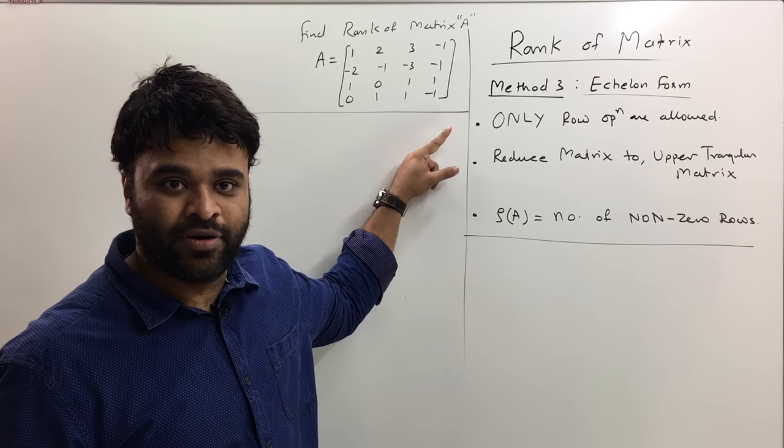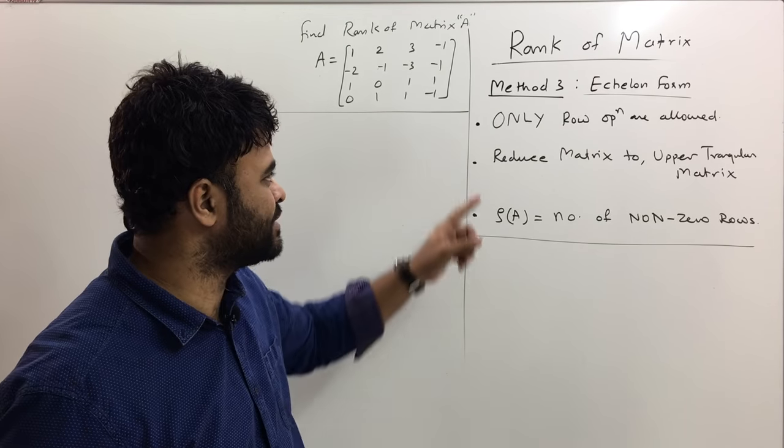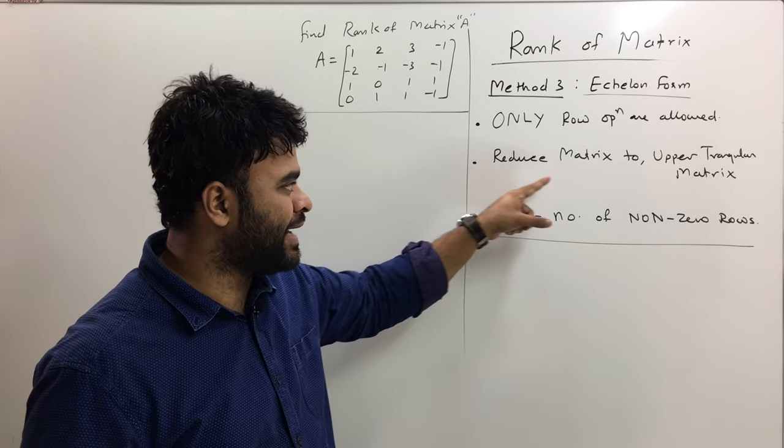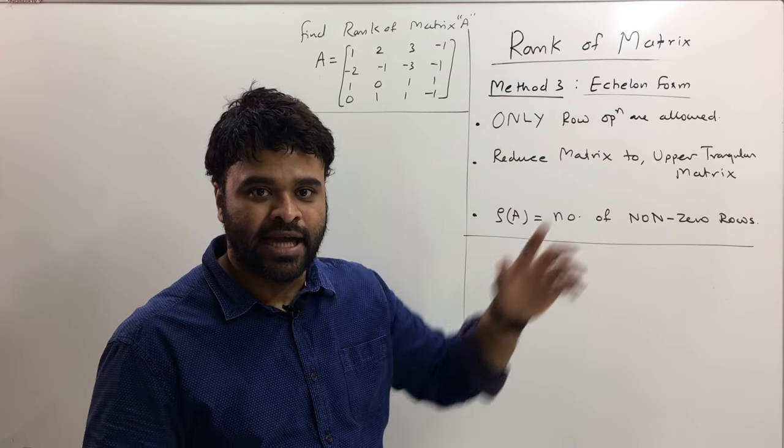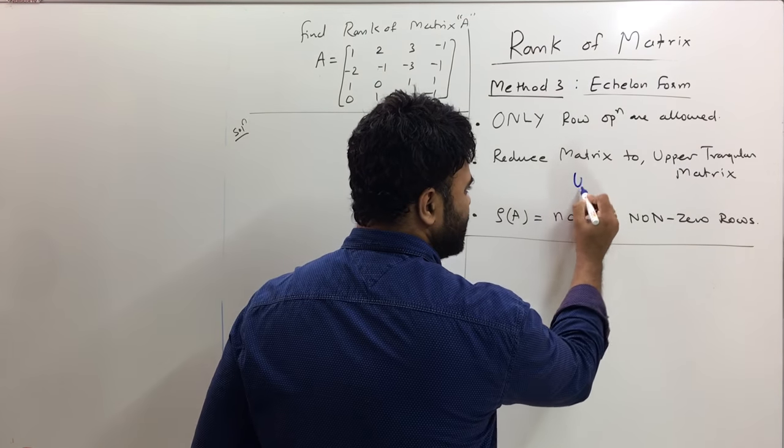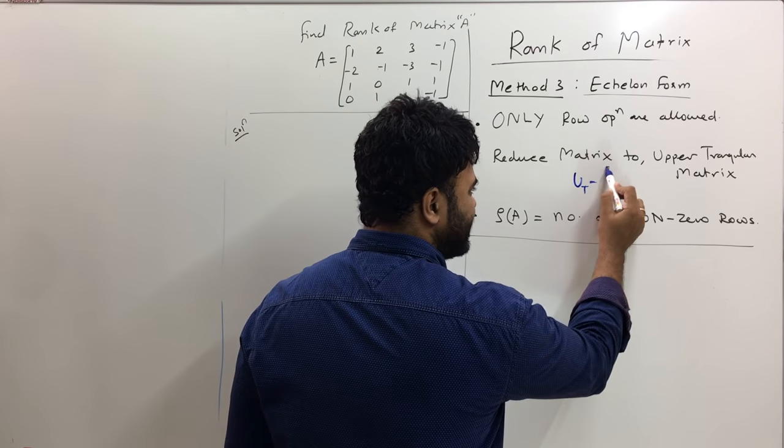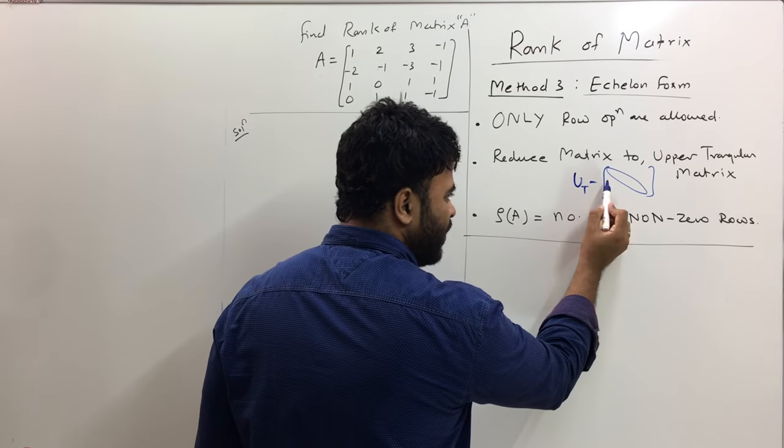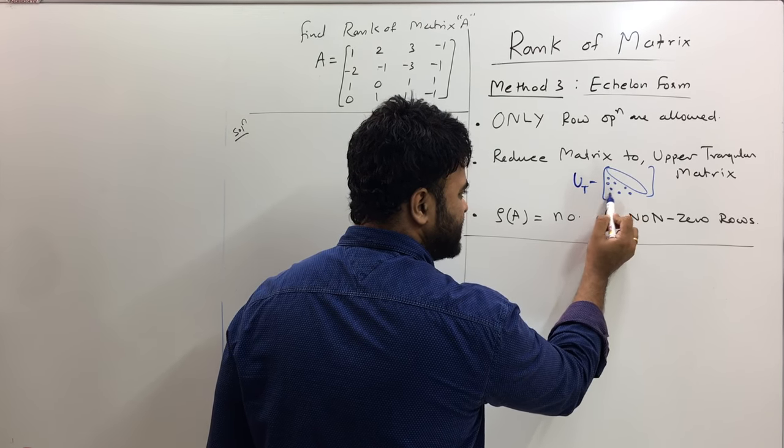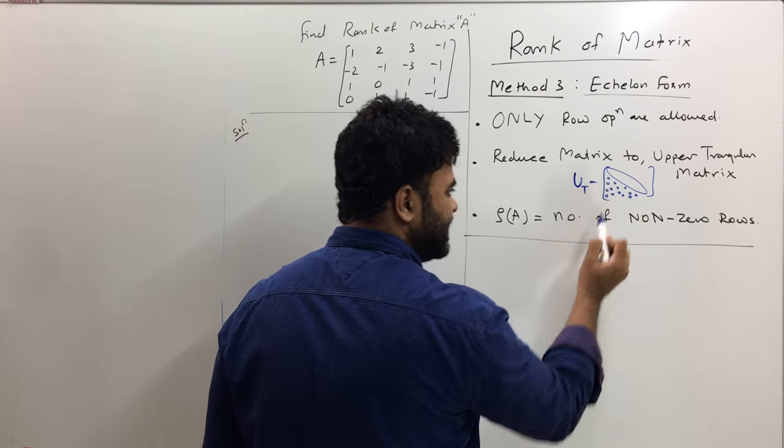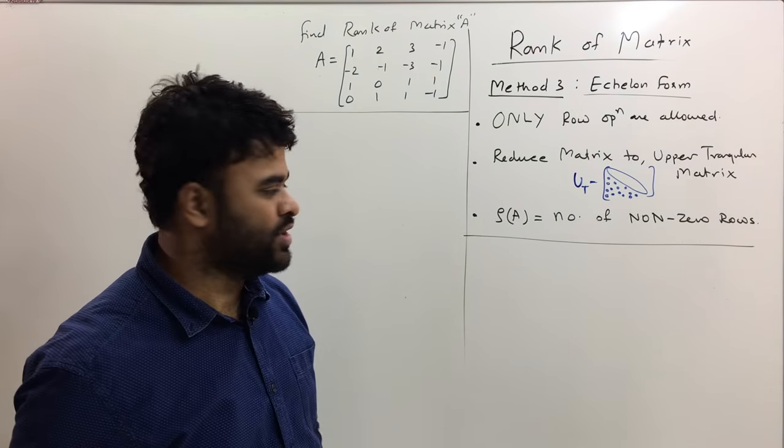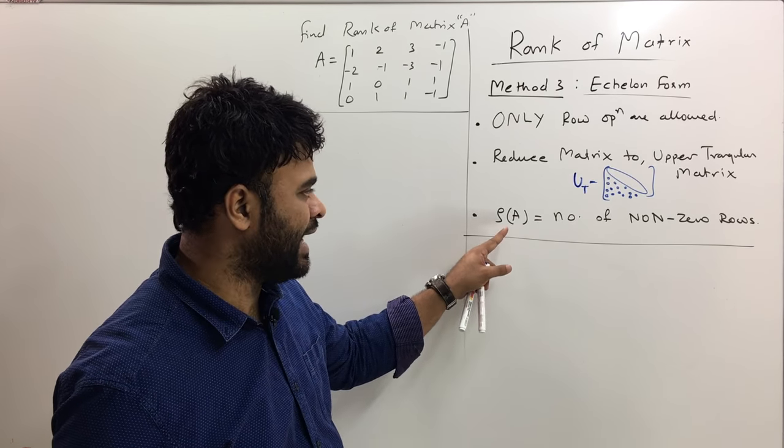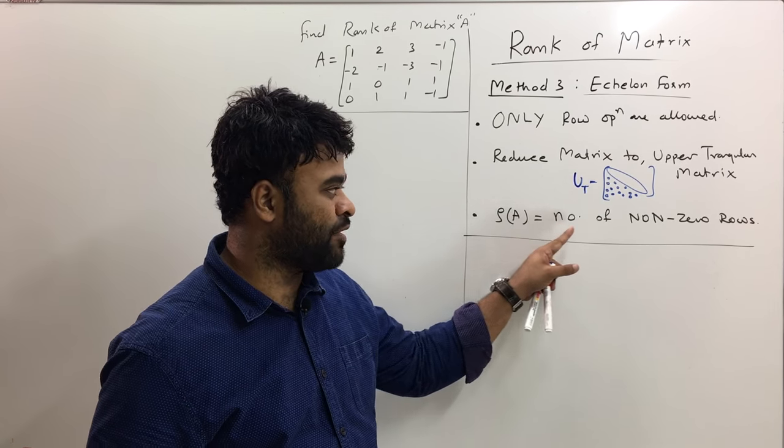The first point says only row operations are allowed. No column operations, only row operations. Sometimes this is called row echelon form as well. Second, reduce the matrix not to identity matrix but to an upper triangular matrix. Upper triangular matrix means if this is your diagonal, below these diagonal elements every number has to become zero. Once you do that, the rank is the number of non-zero rows.